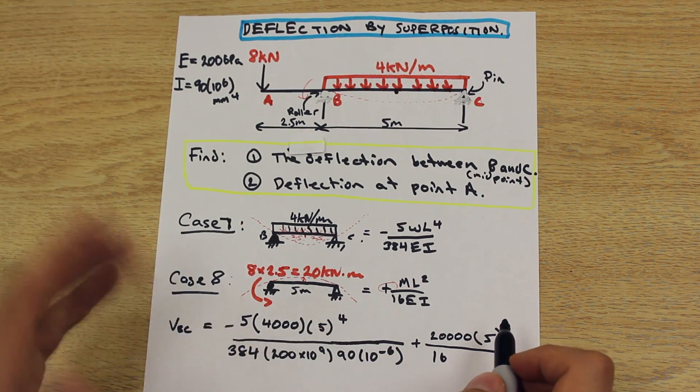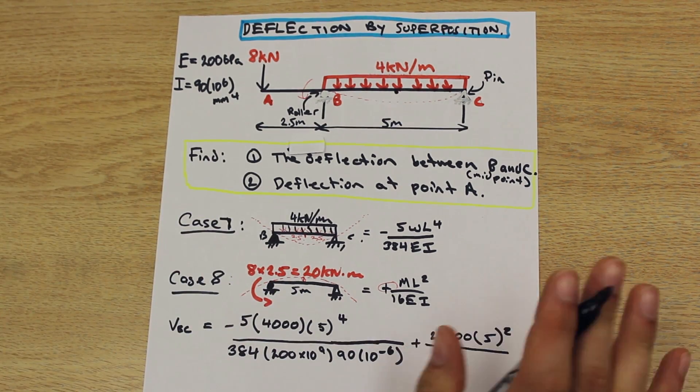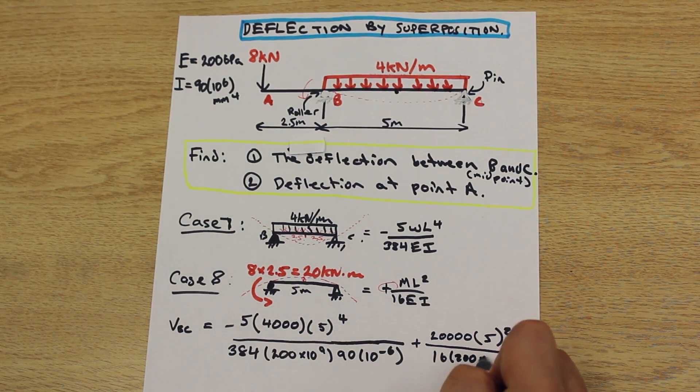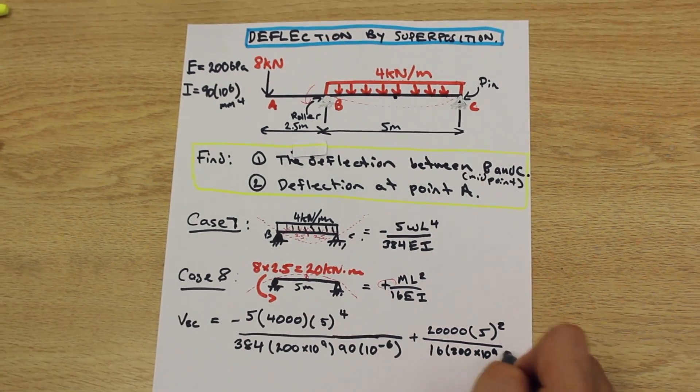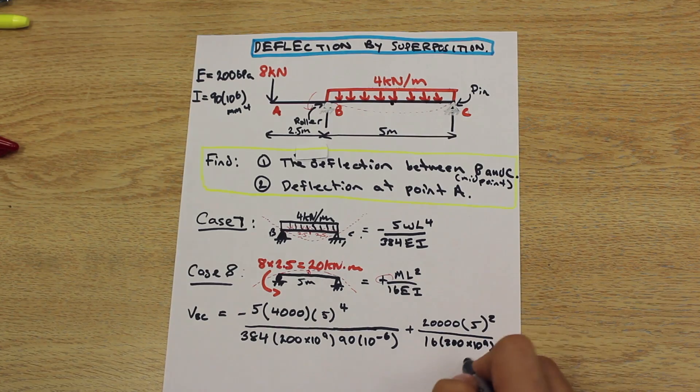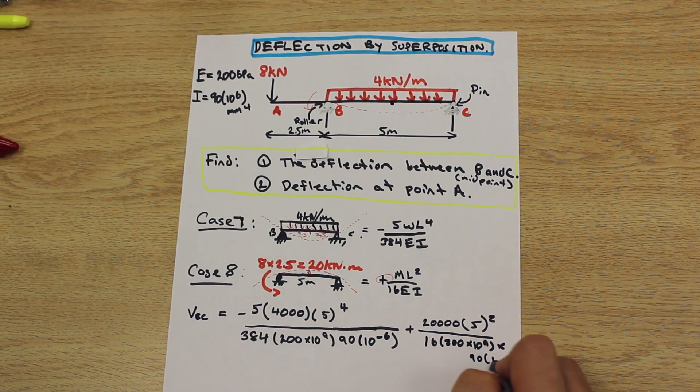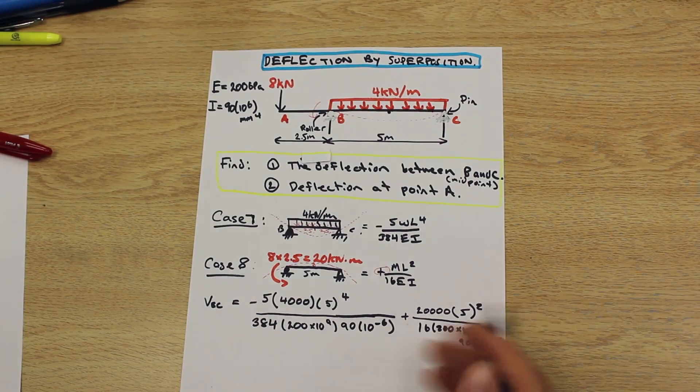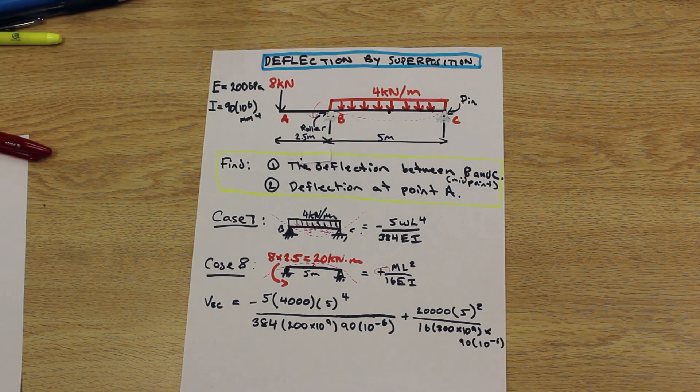And once again, we're just going to plug in EI. If you want to factor out EI and move it outside the equation, that's fine. But I'll just write it twice here. 200 times 10 to the 9. And sorry, I ran out of room here, guys. 90 times 10 to the negative 6. So that's multiplied.